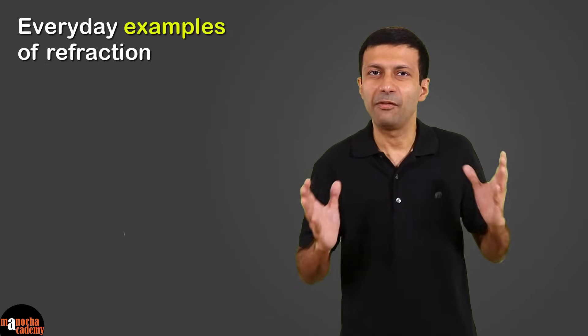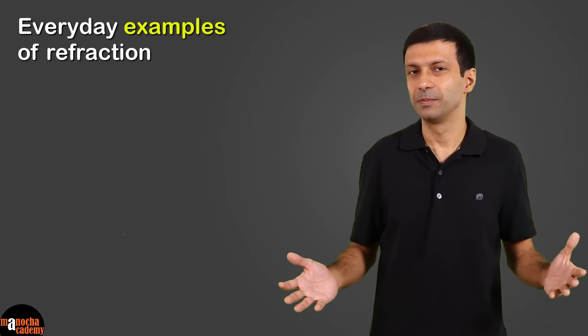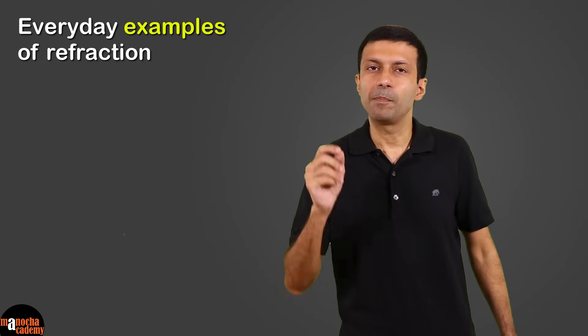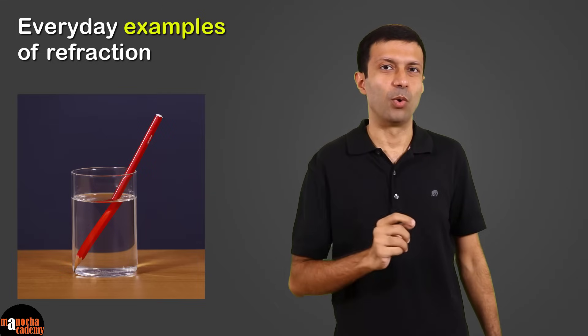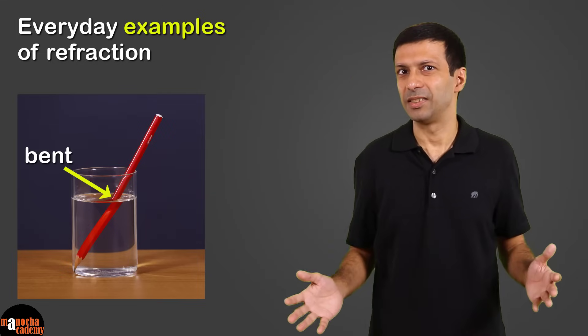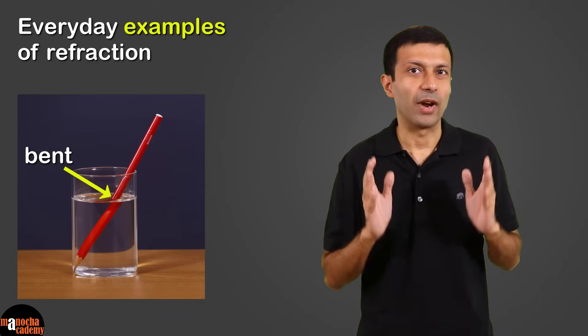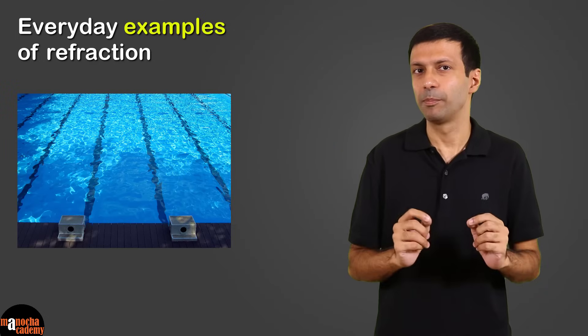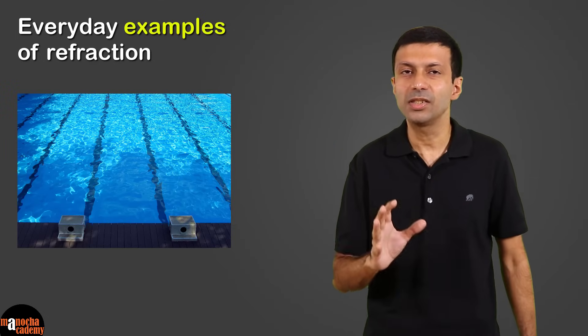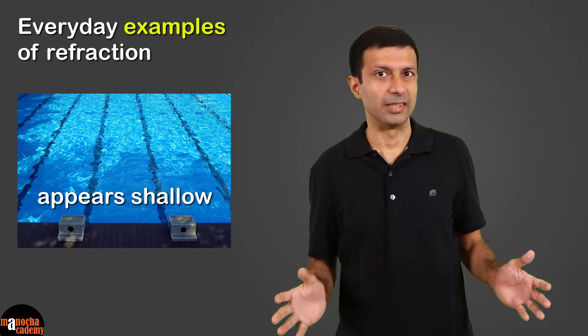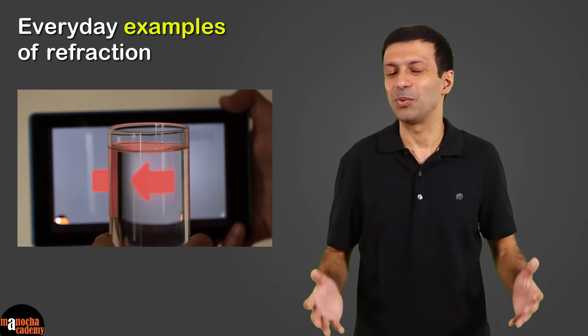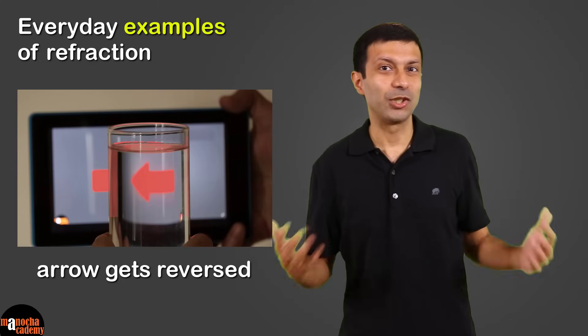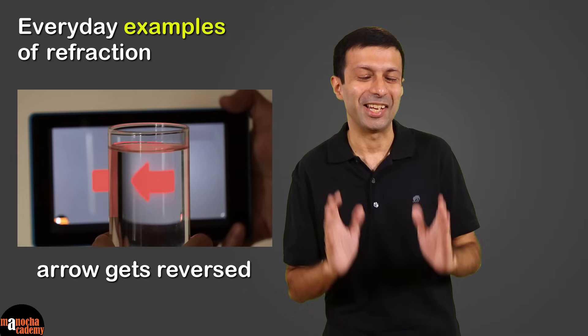Have you seen any simple everyday examples of refraction? One thing that you might have noticed or you can try yourself is take a pencil and put it in a glass of water. The pencil will appear bent. It's due to refraction of light. Another example is if you go and stand near a swimming pool, it actually appears shallower than it really is. And of course, the magic trick that we saw at the beginning of the video. So do go ahead and show it to your friends, but don't tell them the secret.